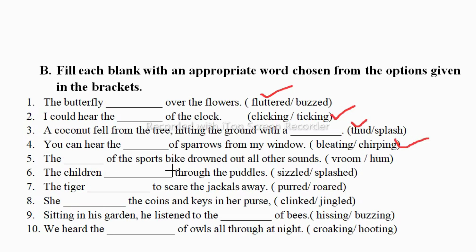The dash of the sports bike drowned out all other sounds — vroom or hum? Hum is the sound made by closed lips, so it's the vroom sound which is made by the sports bike. Threw the puddles — sizzle or splash? The splash sound comes from water. In rainy water, usually children splash around in the puddles.